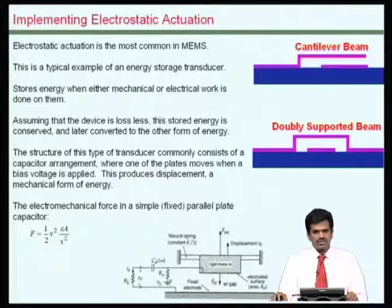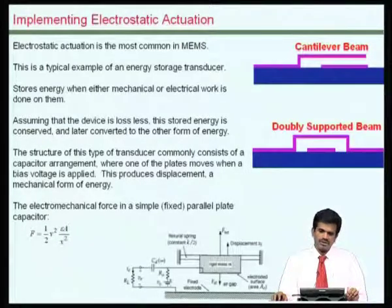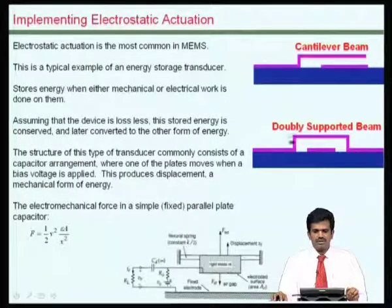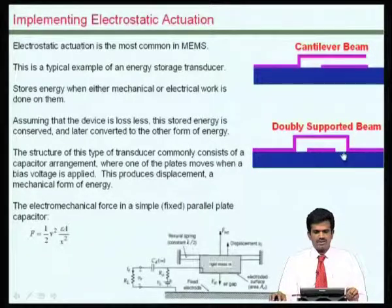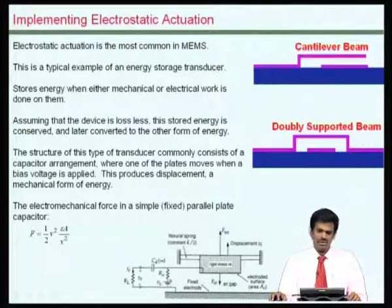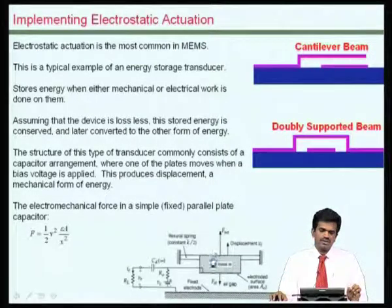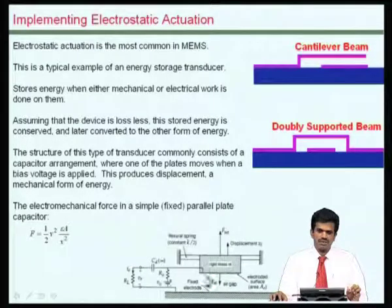We will see now how this could be extended to building useful devices, for example, a micro relay or an RF switch. The configuration could be either based on a cantilever beam or a double-supported beam. In the first case, when the beam is actuated electrostatically, contact is made and there will be transmission from one side to the other. In another example, when actuation takes place, a short circuit happens which essentially bypasses the circuit. In both cases, the beam structure is supported, actuated, and the electrostatic force basically pulls it down.